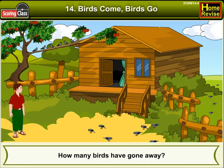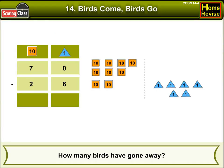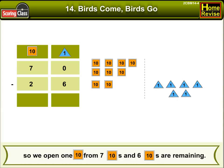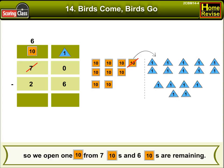First, write it like this. Here, we cannot subtract 6 from 0. So, we'll open 1 ten from 7 to get 10 ones. And 6 tens are remaining.